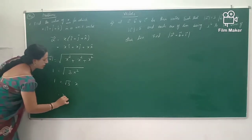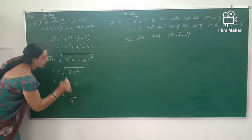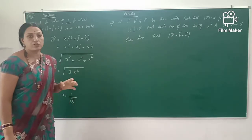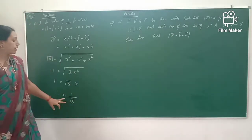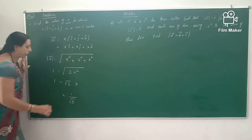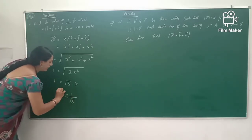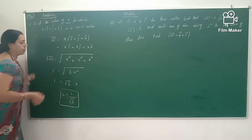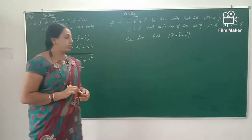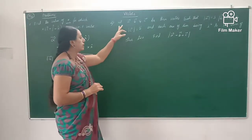Therefore x is equal to 1 divided by root 3. But if you consider the modulus, x is always positive, but the values of x can be either positive or negative. So therefore the value of x is equal to either plus 1 by root 3 or minus 1 by root 3.